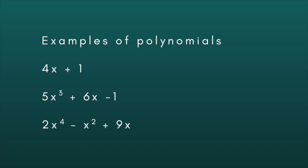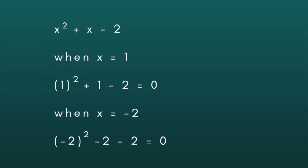A root of a polynomial is a value or values of the variable that makes the polynomial equal to 0. For example, the roots of the polynomial x squared plus x minus 2 are 1 and minus 2, because if you put these numbers in place of x, you'll zero out the expression.